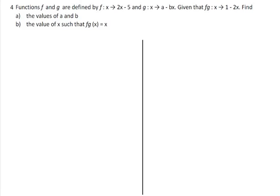Functions f and g are defined — this is function f and this is function g. Also given that the composite function fg is this one, then find: part a, the value of a and b. Let's solve this equation.